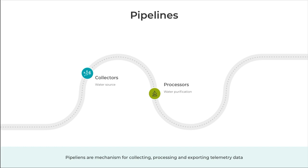Then you have processors, which are the water purification systems in this analogy. This is where water that's collected undergoes purification — like filtration and chemical treatment — to make it safe for consumption. In open telemetry, this is where the raw telemetry data is processed: removing unnecessary data, enriching it with context and transforming it. All of this happens during the processing phase of the pipeline.